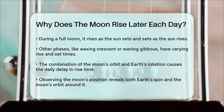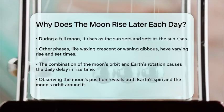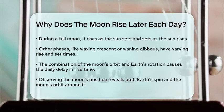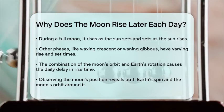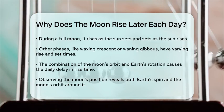So, to sum it up, the moon rises later each day because of its eastward orbital motion around the Earth and the Earth's own rotation. This combination results in a daily delay of about 50 minutes in the moon's rise time.